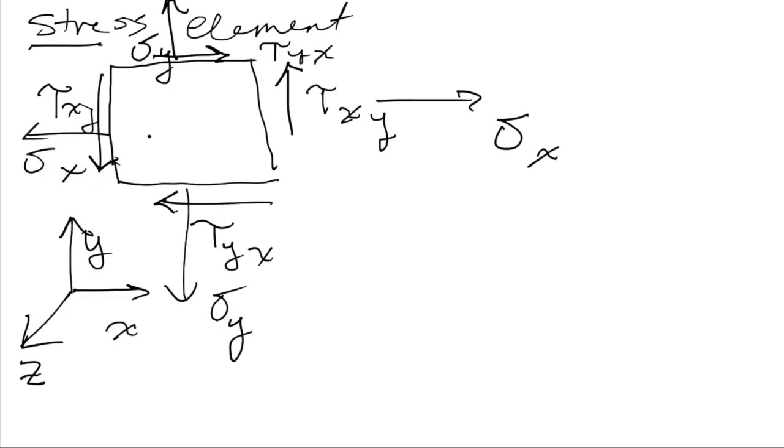This is plane stress. Plane stress says in one dimension, in one direction, in this case the z direction, all stress components are going to be zero. And so we don't even need to draw any more than this square with these components because this is everything that could possibly be non-zero.